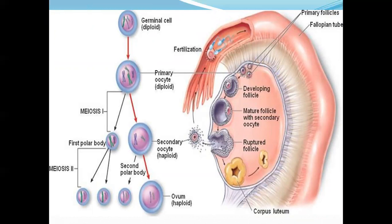Along with oogenesis, there is development of the follicle — known as folliculogenesis. At birth, the oogonia or primary oocyte is within the primordial follicle, also known as the primary follicle. Subsequently the secondary oocyte develops within a matured secondary follicle. At ovulation the ovum is expelled, and the ruptured follicle forms the corpus luteum, which finally degenerates as corpus albicans.